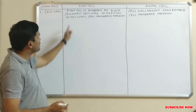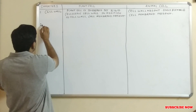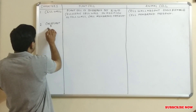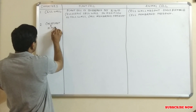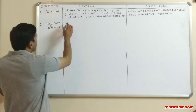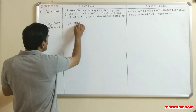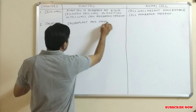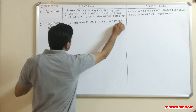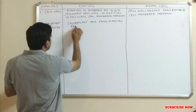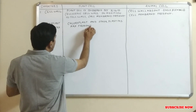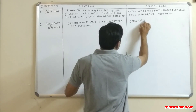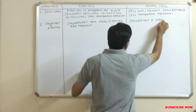The second point of differentiation is chloroplast and other plastids. Chloroplasts and other plastids are present in the plant cell — this is a key feature of plant cells. While in the animal cell, chloroplasts and other plastids are absent.